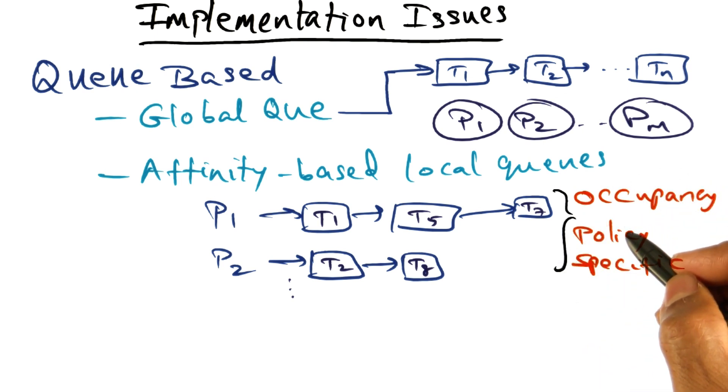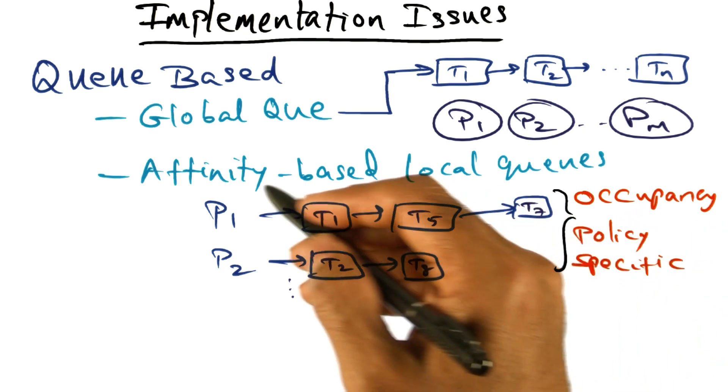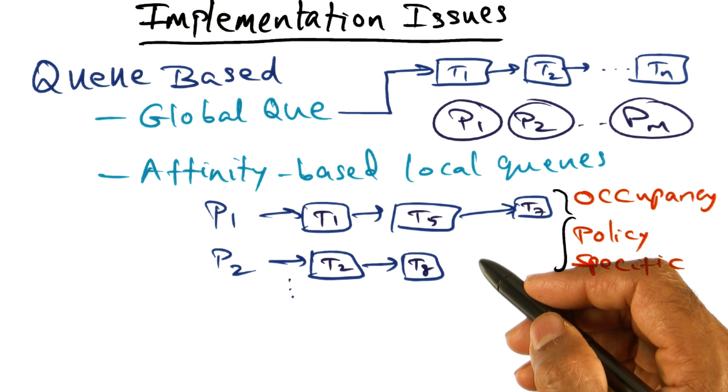So if it is last processor, or is it fixed processor, or is it the minimum intervening, or is it minimum intervening plus queuing, all of those things will decide how these local queues are going to be maintained.